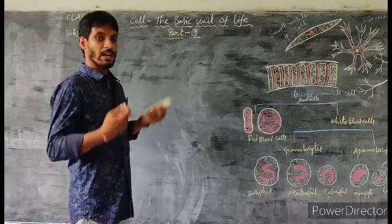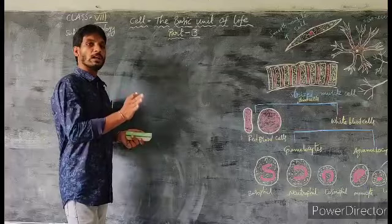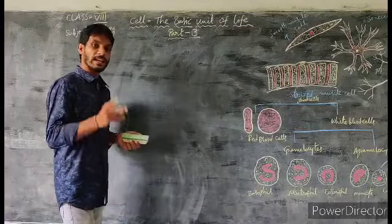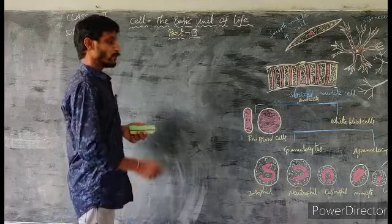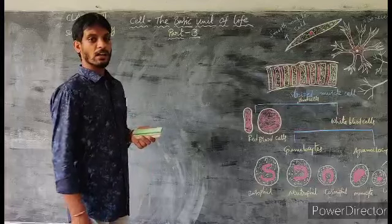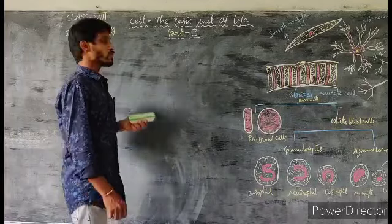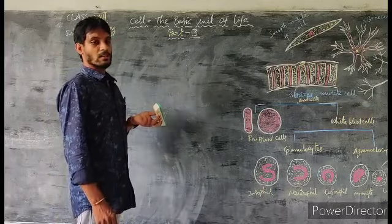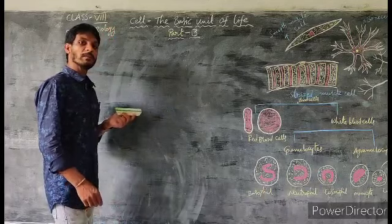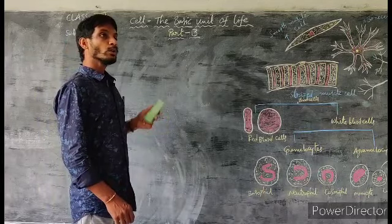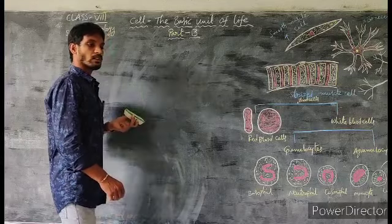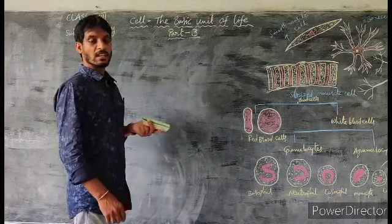Millions of organisms live on the earth, but the number of cells are not same in all the organisms. The number of cells are different from one to another. Based on that, organisms are mainly categorized into two types: unicellular organisms and multicellular organisms. In unicellular organisms, 'uni' means single — organisms with a single cell throughout life are called unicellular organisms. 'Multi' means more — organisms with two or more than two cells are called multicellular organisms.